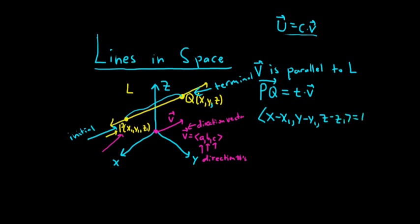And this is equal to T times our direction vectors. So we have our direction numbers, A, B, C. What a beautiful argument. Now you can perform scalar multiplication here, right? Distribute the T to the components of V. So we have X minus X sub 1, Y minus Y sub 1, Z minus Z sub 1. Equals, and here we have TA, TB, TC.